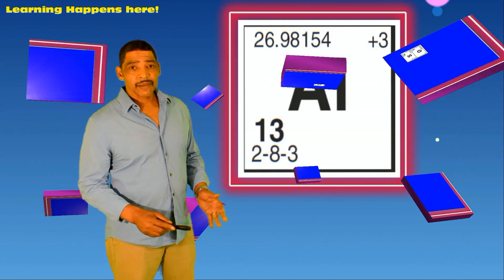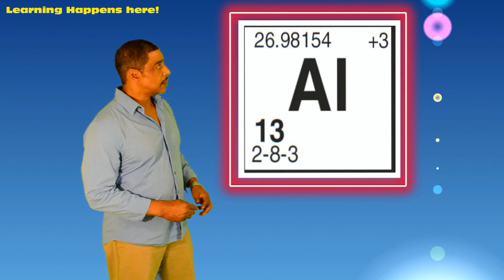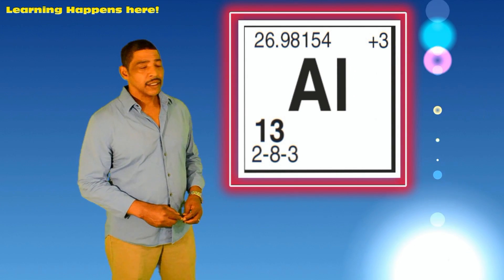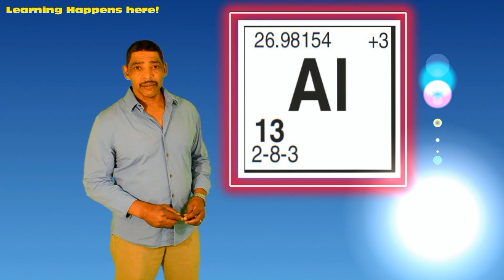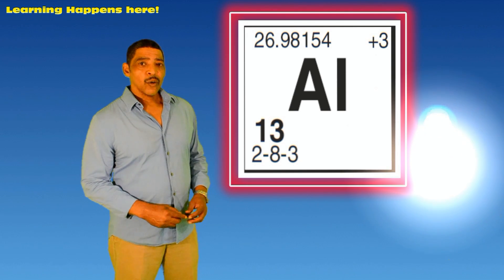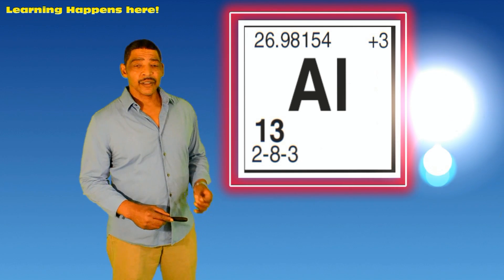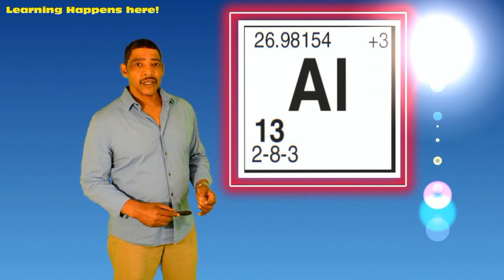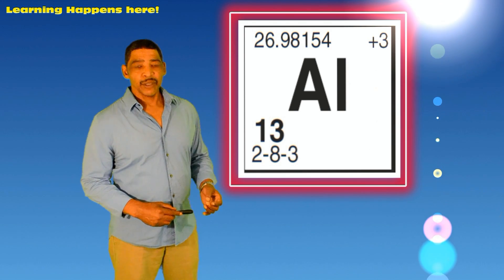According to the periodic table, the average atomic mass of aluminum is listed as 26.98154 amu. However, when determining the formula mass of a compound, instead of amu we simply use 26.98 grams.